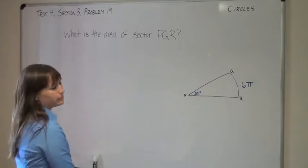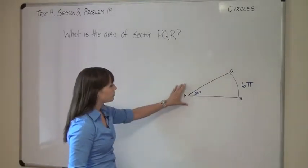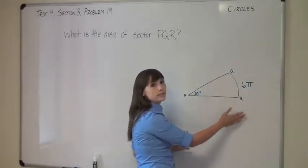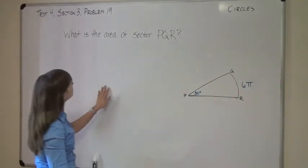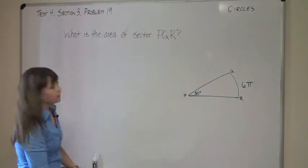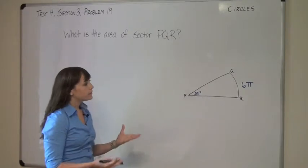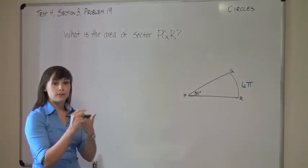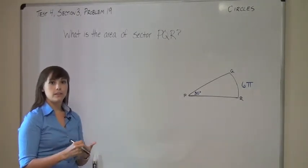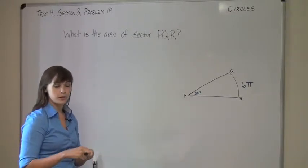This is a circles problem. You're given this diagram of a sector with a central angle of 30 degrees and an arc length of 6π, and asked what is the area of sector PQR. Now, as with any problem, there's more than one way to handle this, but if you're dealing with a question that asks about sector area or arc length, there's one approach you can use that'll work every single time, so that's the approach we're going to take.